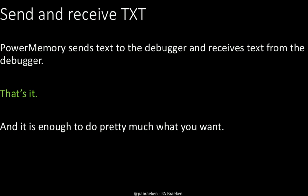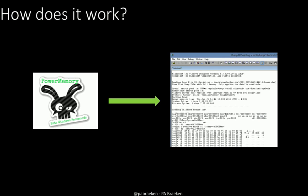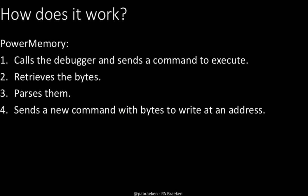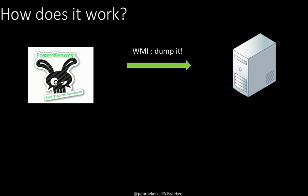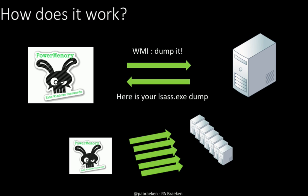When I say text, it's bytes. How does it work? You have PowerMemory on one side and WinDBG or CDB — the command-line version of WinDBG, a Windows debugger from Microsoft which is signed. PowerMemory calls the debugger, sends a command to execute, retrieves the bytes, parses them, and sends a new command with bytes to write or read. So you have a server somewhere, and PowerMemory will say — via a WMI call — dump the memory for this process, and the server answers with, for example, an lsass.exe dump containing interesting information like passwords.